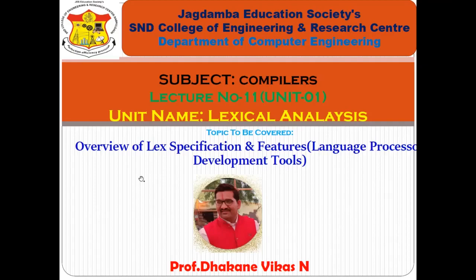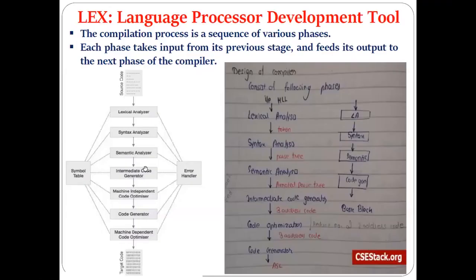In Unit 1, which is lexical analysis, we have already discussed the different things related to the first phase of the compiler. Phases are nothing but the different stages in the compilation process. We discussed what the lexical analyzer is, its role in generating tokens, how it can be generated, and the role of regular expressions in defining patterns — rules which describe particular tokens.